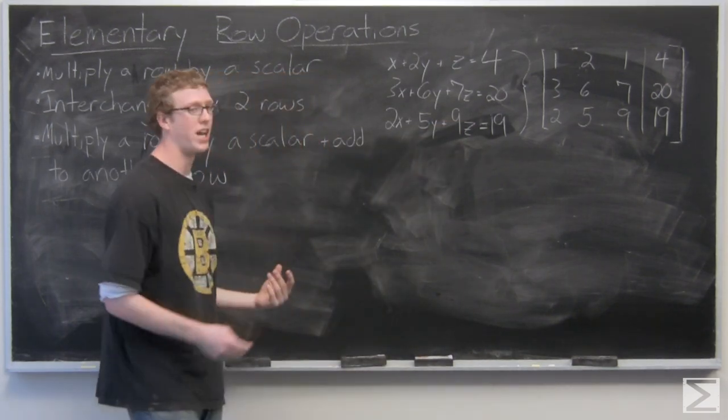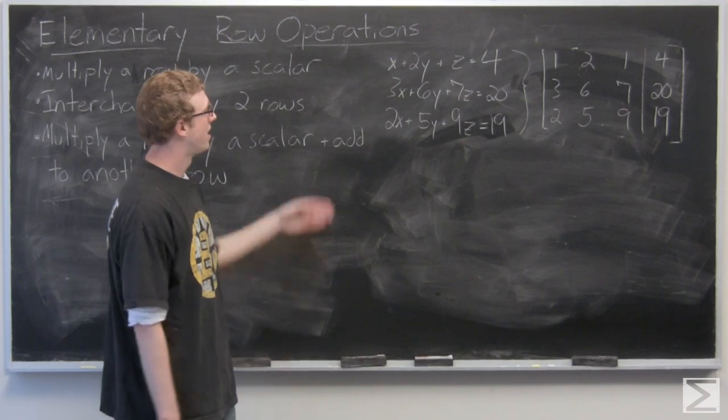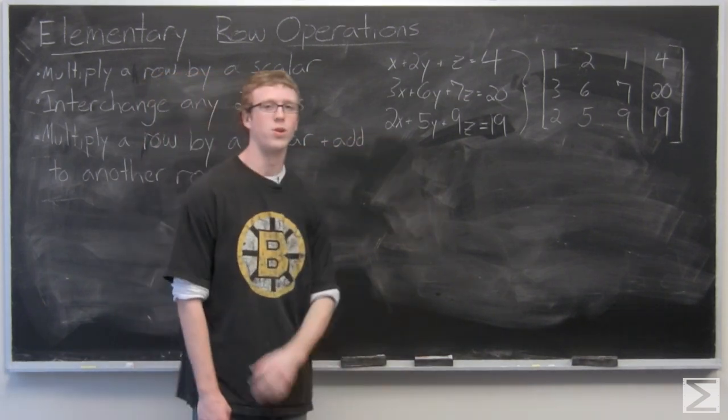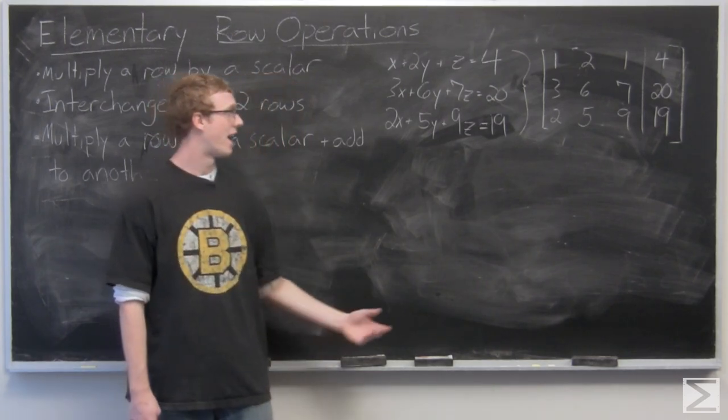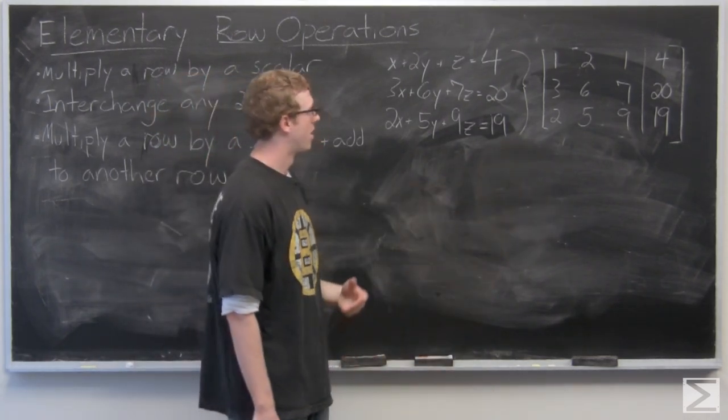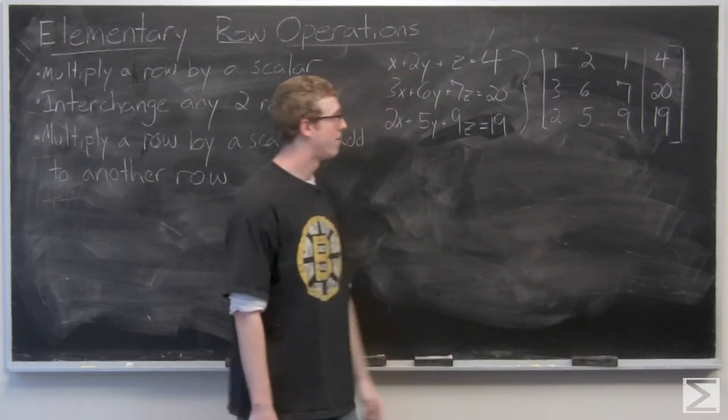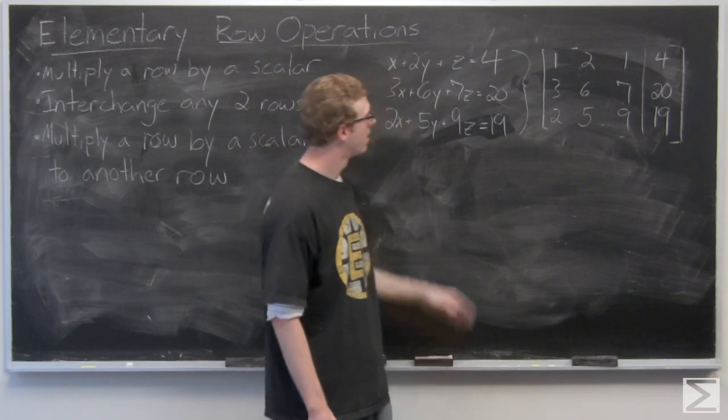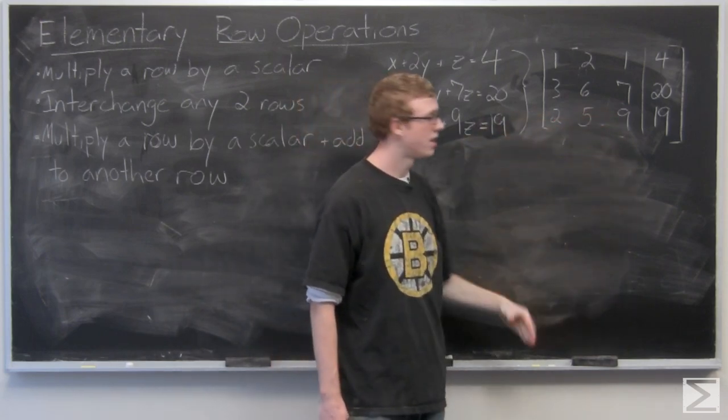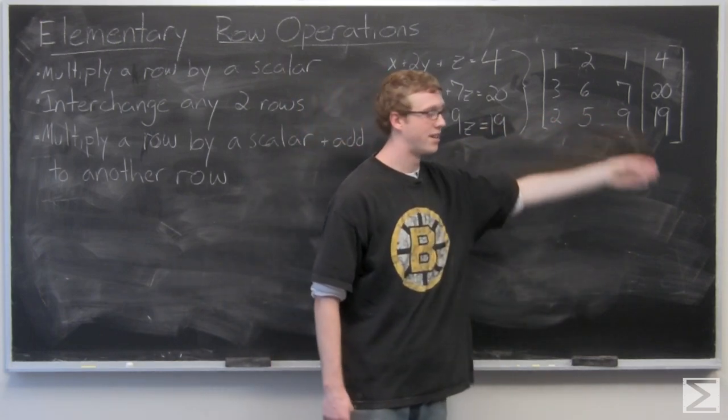One of the most important applications of matrices is that systems of equations such as this over here on the right can be written as matrices. So over here we have an augmented coefficient matrix: 1, 2, 1, and 4 on the right; 3, 6, 7, and 20; and 2, 5, 9, 19.